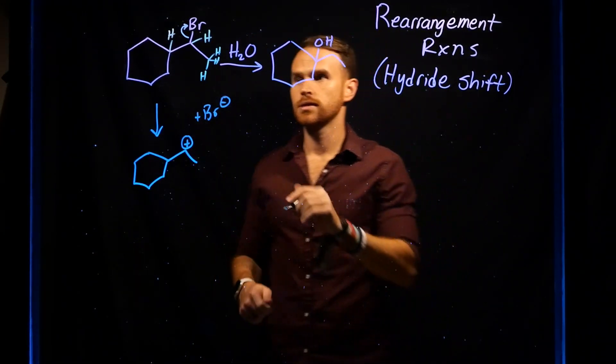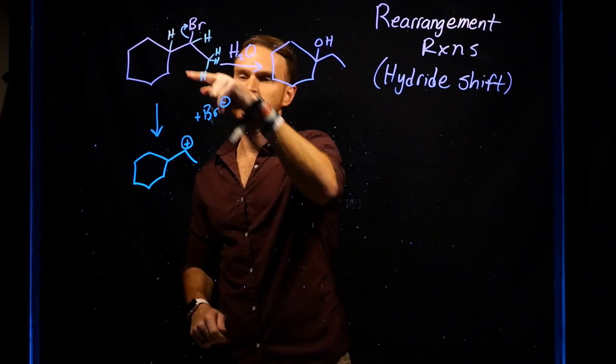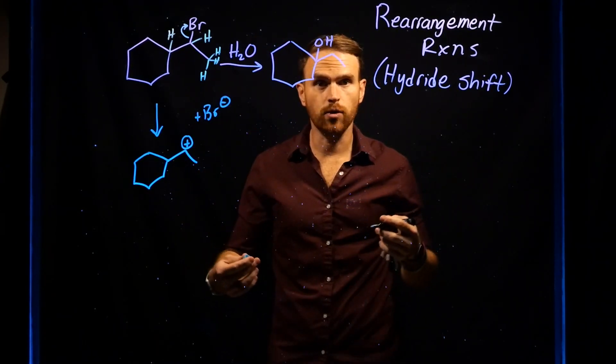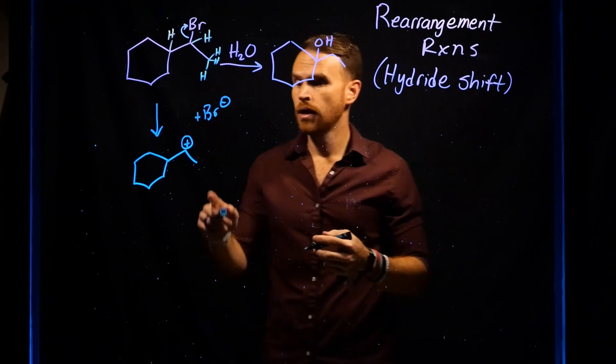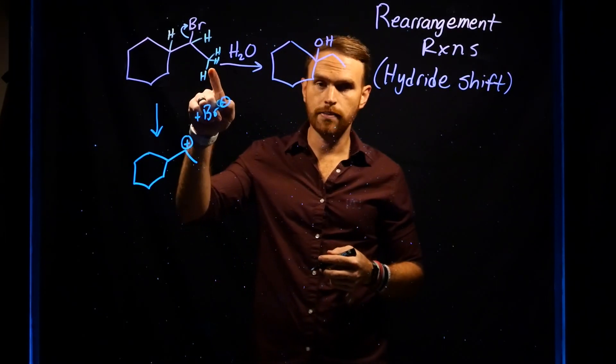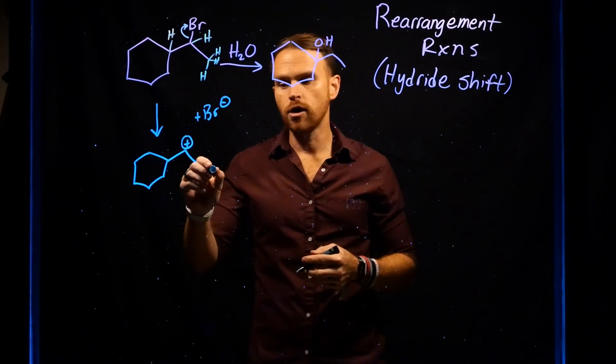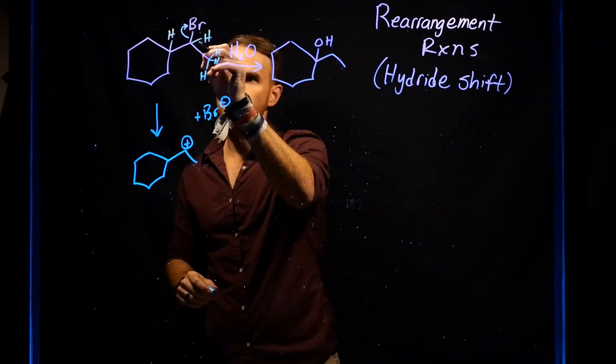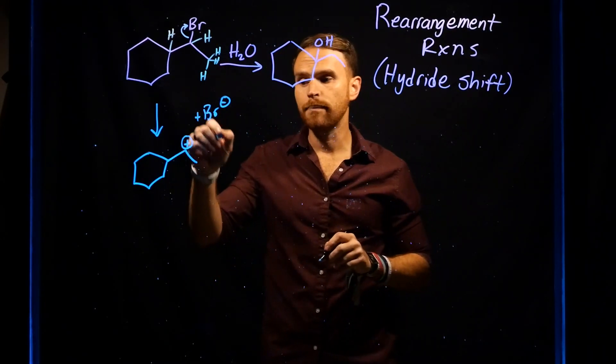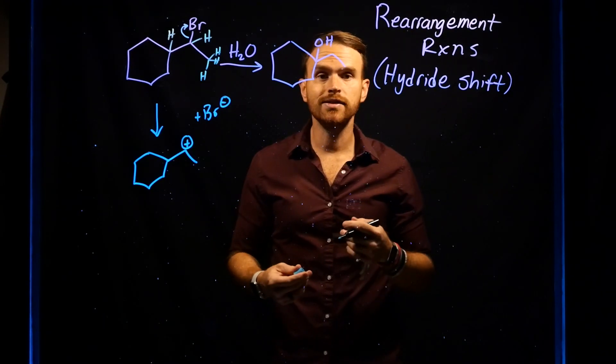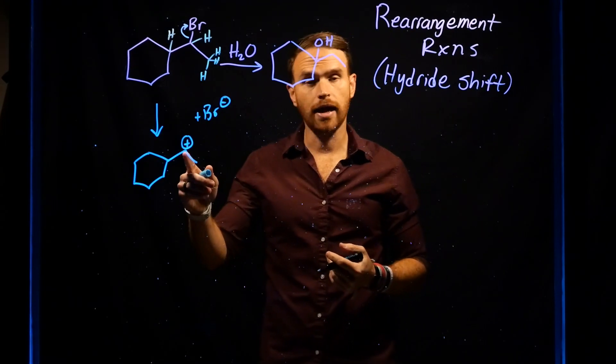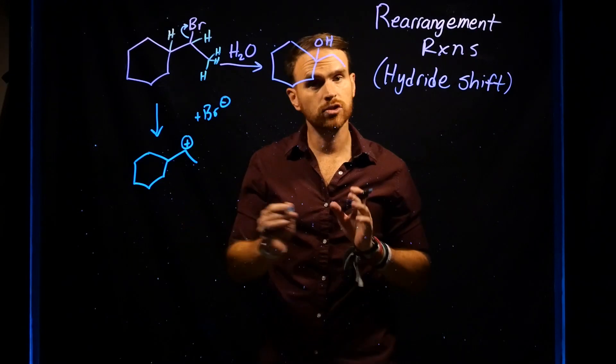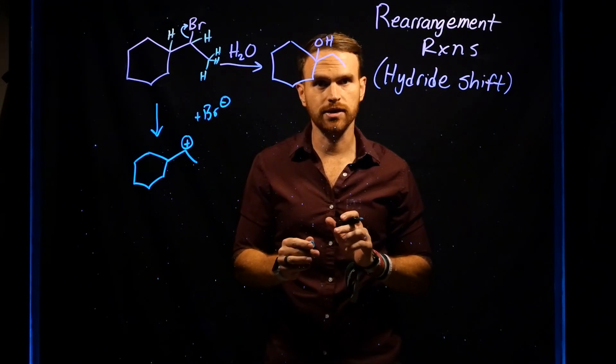And notice that there are two different positions with which a rearrangement can occur. The first one would be at this primary carbon position, which we know that if one of these hydrides were to shift over, what would happen is you would generate a primary carbocation. And this is going to be less favorable than having a secondary carbocation. So that pathway is unlikely to proceed.